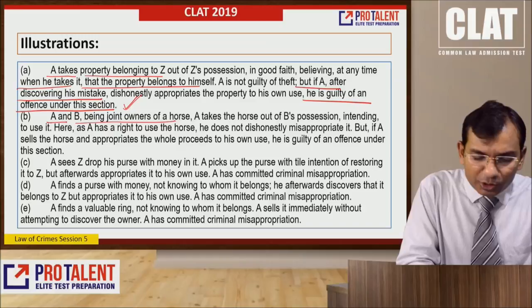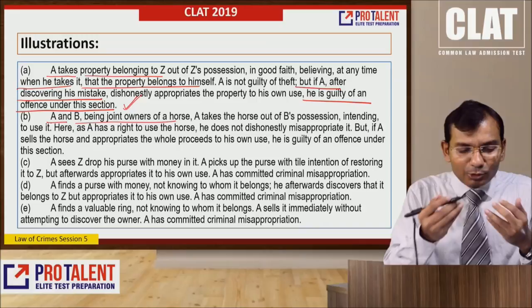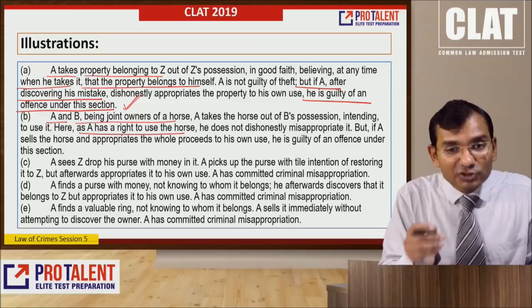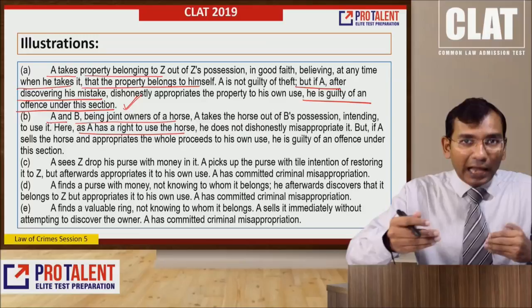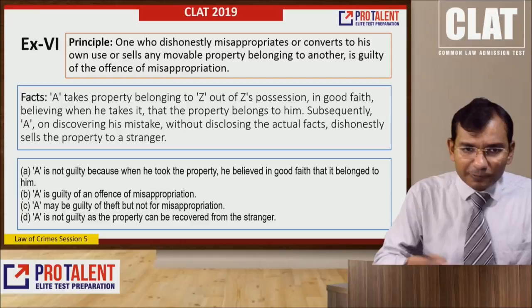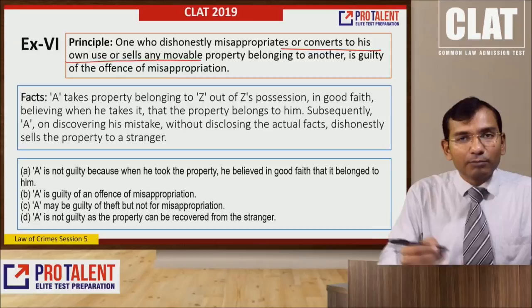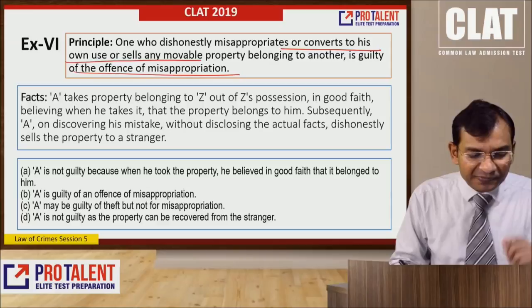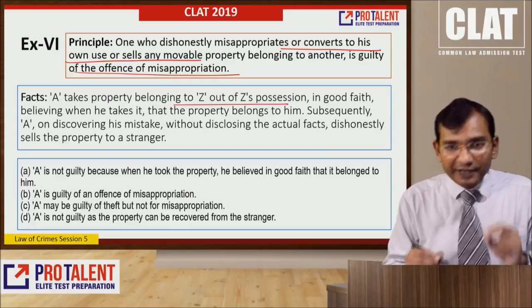Another illustration: A and B are joint owners of a horse. A takes the horse out of B's possession intending to use it. Since A has a right to use the horse, he does not dishonestly misappropriate it. But if A sells the horse and appropriates the whole money, he is guilty of criminal misappropriation. Example 6 principle: whoever dishonestly misappropriates, converts to his own use, or sells any movable property belonging to another is guilty of the offense of misappropriation. Fact: A takes property belonging to Z out of Z's possession in good faith believing it is his. Subsequently, on discovering his mistake and without disclosing the facts, A dishonestly sells the property to a stranger — A is guilty of criminal misappropriation, not theft. Answer: B.